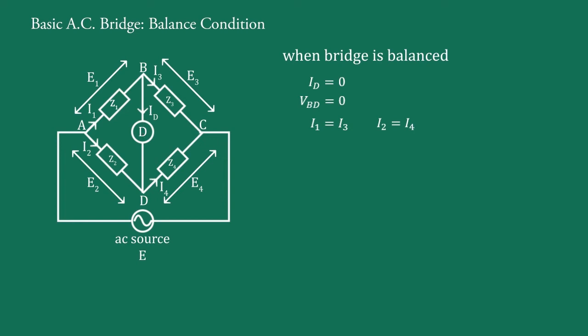Since Vbd = 0, the potential of points B and D is the same, and therefore the potential across Z1 equals the potential across Z2. If we say the potential across Z1 equals E1 and potential across Z2 equals E2, then E1 = E2, and therefore: I1·Z1 = I2·Z2 — this is Equation 1.